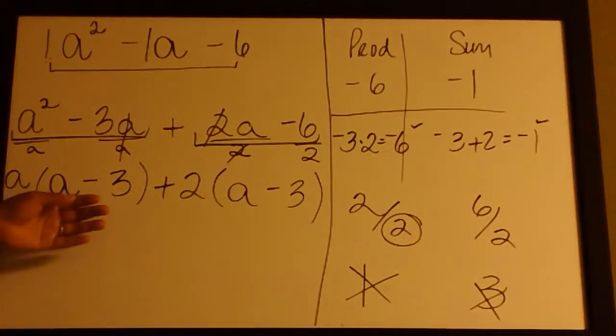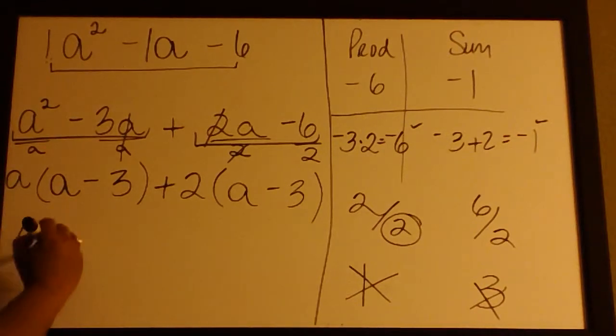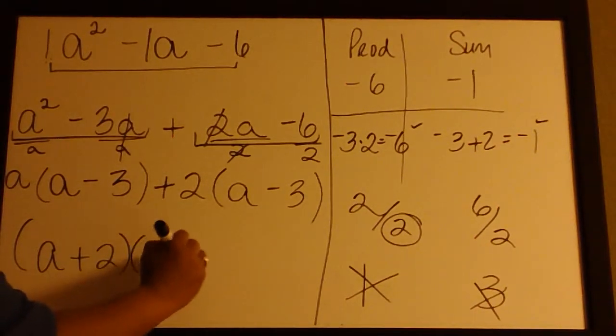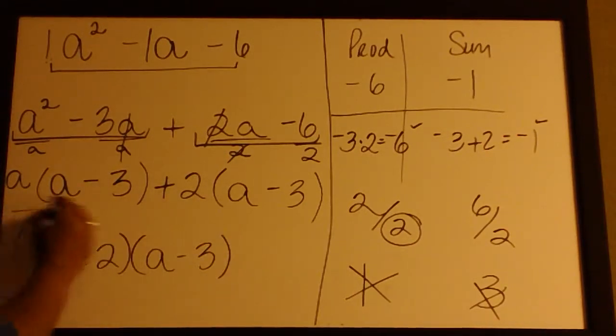Notice that the factors are the same in each parentheses, so when we write our answer we have (a+2) times (a-3).